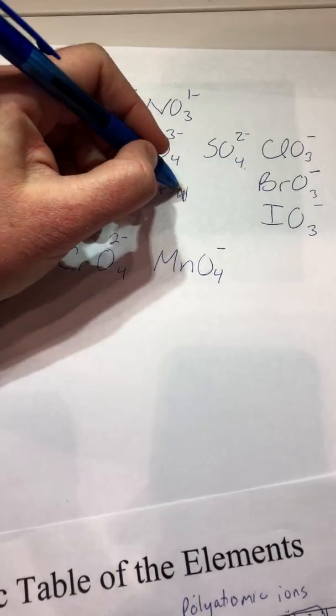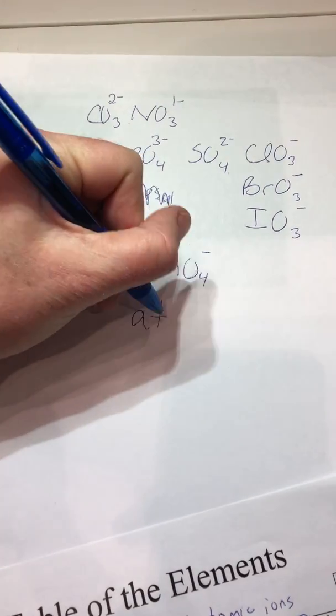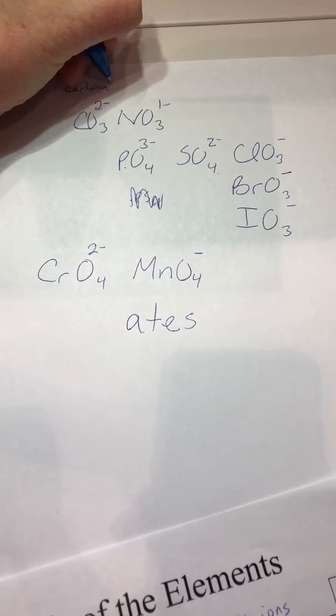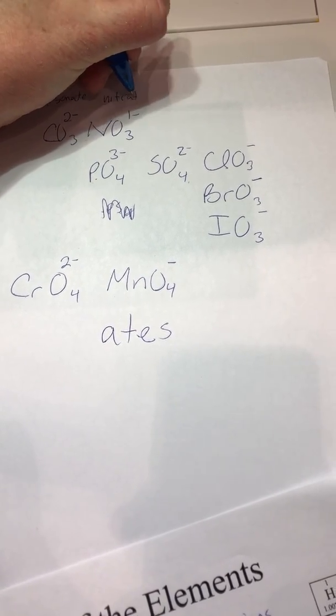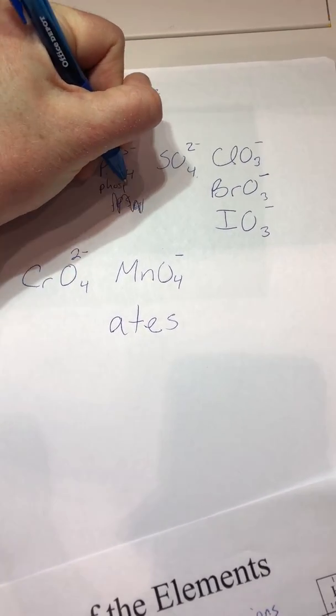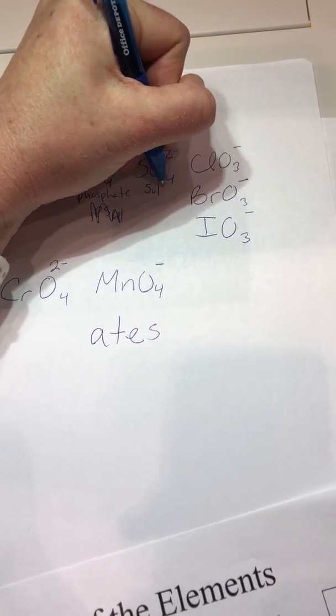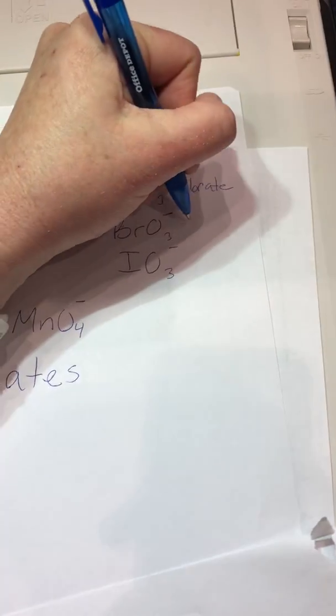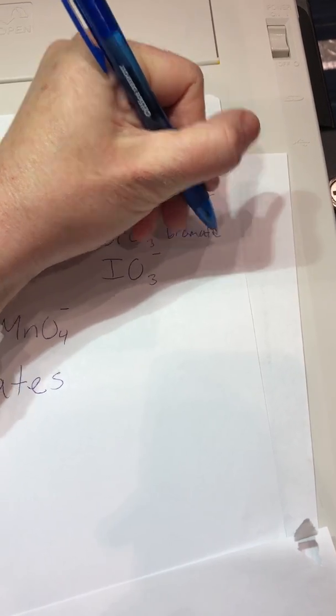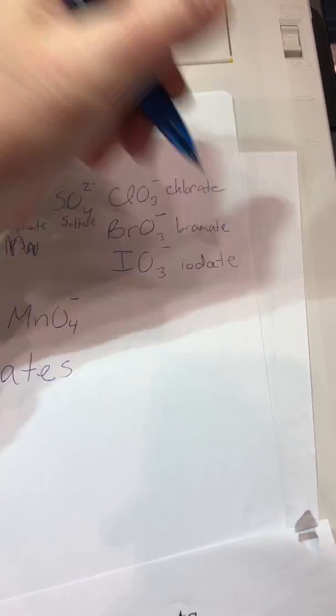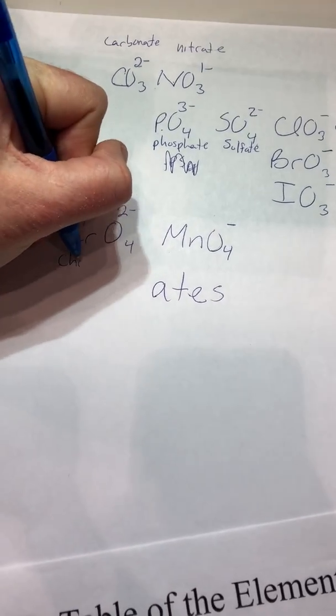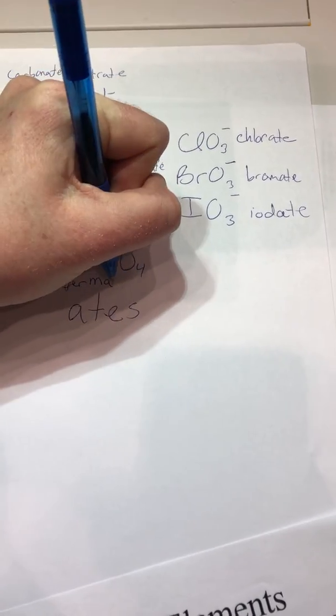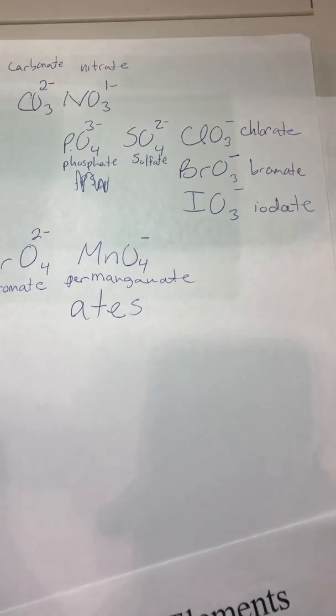So what these are, are the -ates. This is carbonate. This is nitrate. This is phosphate. Sulfate. Chlorate. Bromate. Iodate. Chromate. And this is actually called permanganate. A little different.